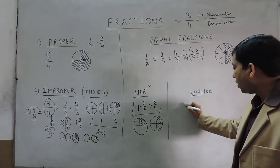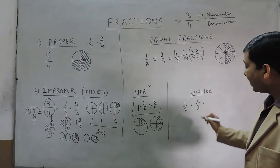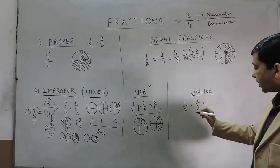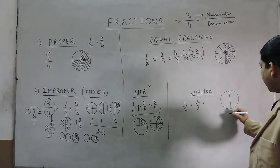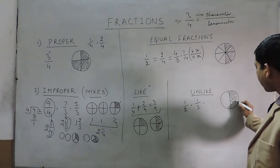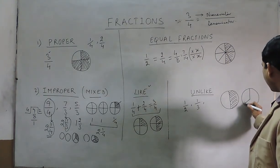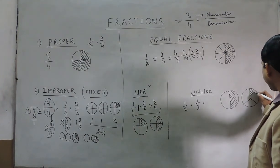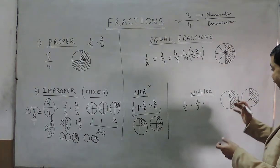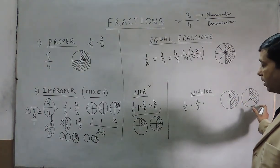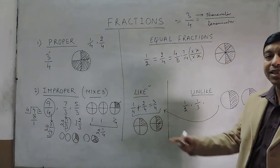Unlike fractions are ones where the denominators are different, such as 1 upon 2 and 1 upon 3. Visualizing 1 upon 2 means dividing a body into two parts and taking one. For 1 upon 3, we divide a body into three parts and take one part. This part is different from the other, so we cannot add or subtract them directly. To do so, we have to convert them into like fractions, which we will discuss in the next video.